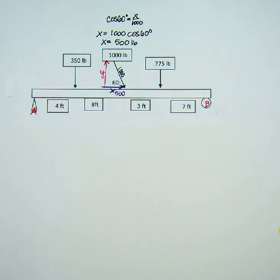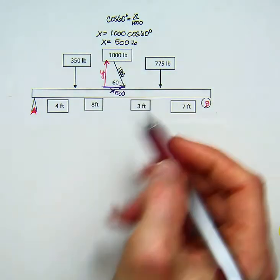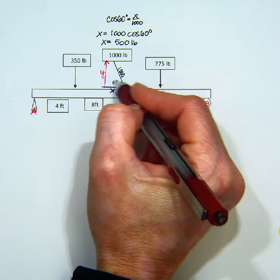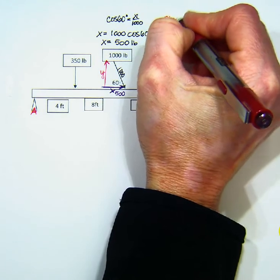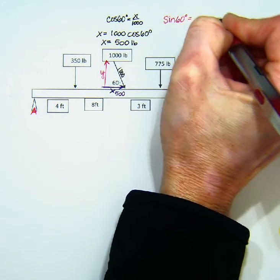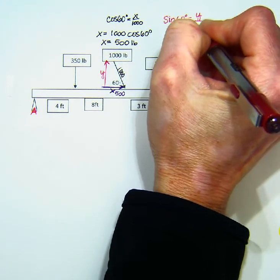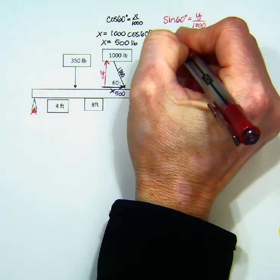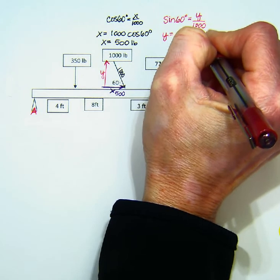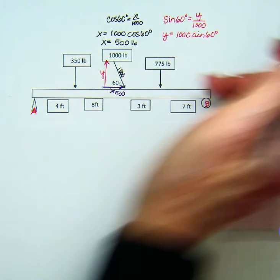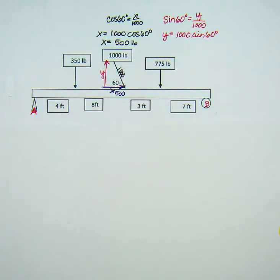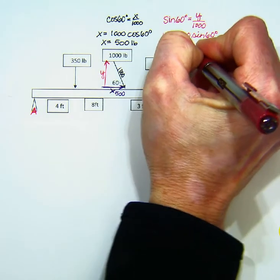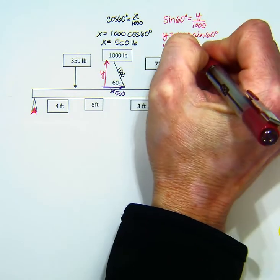And then we're going to solve for the y component, which is opposite 60, and I have a hypotenuse. So opposite and hypotenuse is sine. Opposite is y, and the hypotenuse is still 1,000. So I'm going to multiply both sides by 1,000, and I get y equals 1,000 times the sine of 60 degrees. And so I get y equals 866.03.